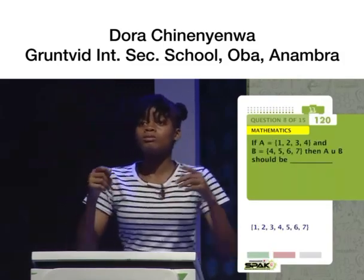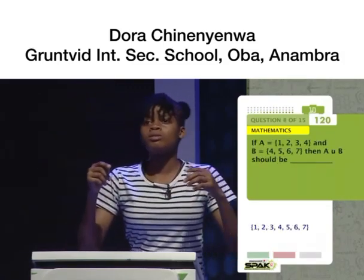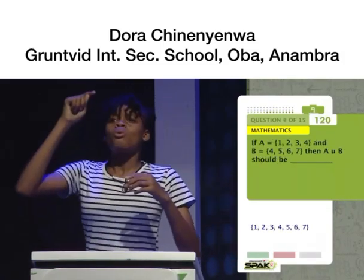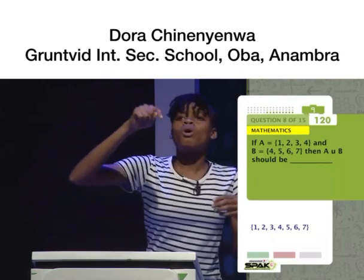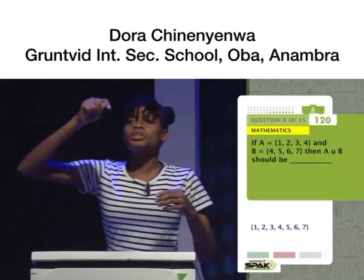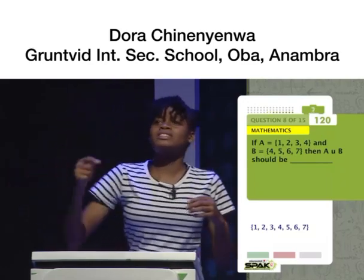If A equals {1, 2, 3, 4} and B equals {4, 5, 6, 7}, then? {1, 2, 3, 4, 5, 6, 7}.